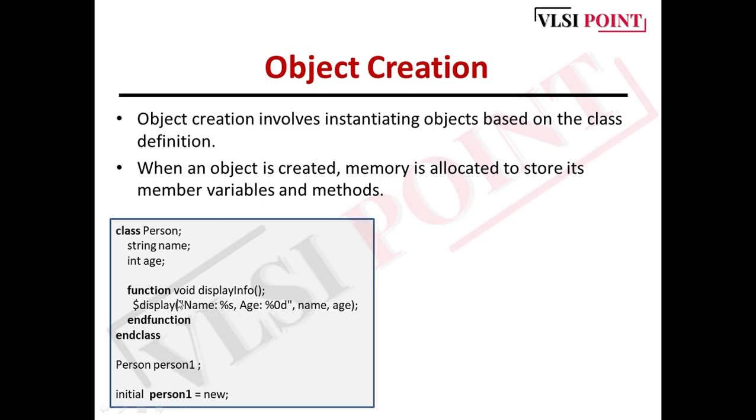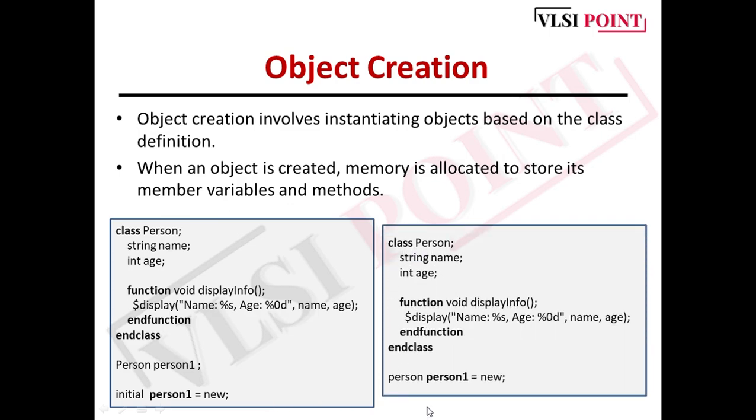After the class is completed, wherever you want to use this class, you have to create an object. This is the class name Person, and the object person1. You can give any name as per your choice. Then initial person1 equals new - we've created an object for the class to use it. There's another way: you can create an object in a single line - person (class name), object name, equals new.